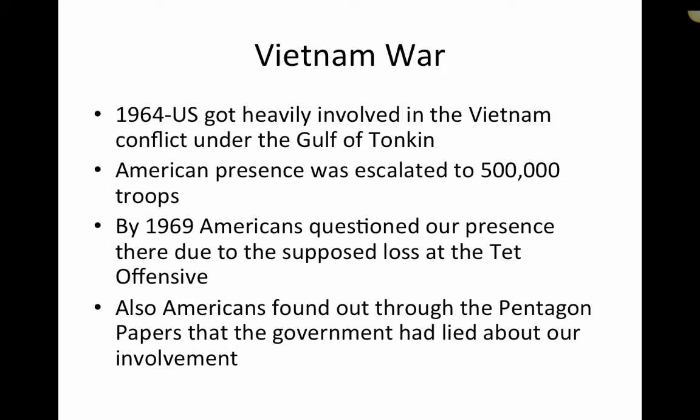One of the strongest questionings of America at the international level came with the Vietnam War. In 1964, the U.S. got heavily involved in the Vietnam conflict under something called the Gulf of Tonkin — supposedly two U.S. battleships, the C. Turner Joy and the Maddox, were attacked by the North Vietnamese. Because of this, President Lyndon Johnson argued for escalating American presence, bringing it up to 500,000 troops.